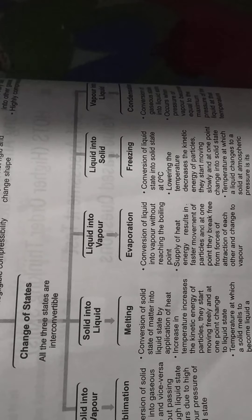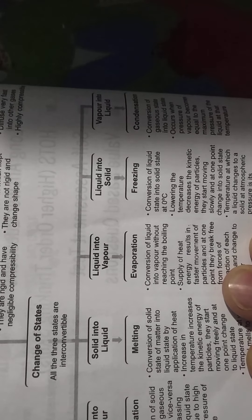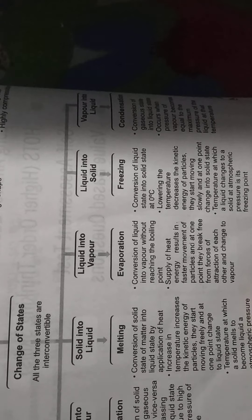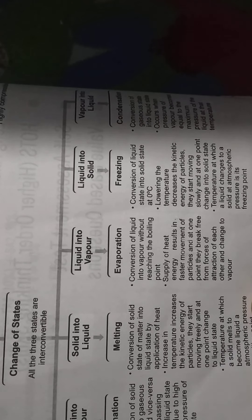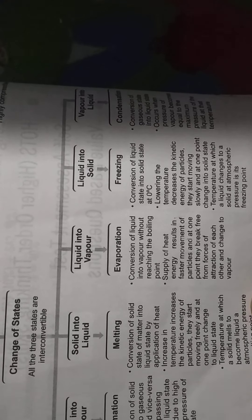What is freezing? Conversion of liquid state into solid state at 0 degrees Celsius. Lowering the temperature decreases the kinetic energy of the particles; they start moving slowly and at one point change into solid state. The temperature at which a liquid changes into solid at atmospheric pressure is its freezing point.